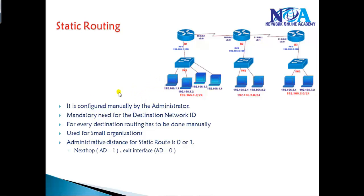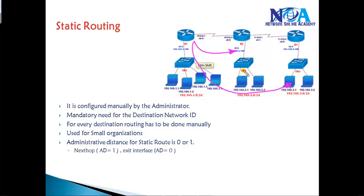Getting back to CCNA topics: static routing is something manually configured by the administrator. The administrator has to go to the command line and manually configure the route for each and every destination — from Router 1 to the 3.network, and from Router 1 to the 2.network. To do that you must know the destination network ID, and if you don't, you cannot write the route. Each destination requires manual configuration.